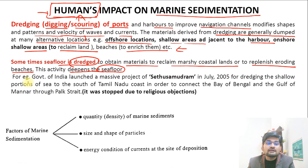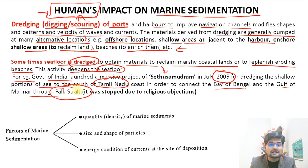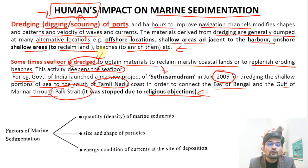For example, the Government of India launched the Setu Samudaram project in 2005 for dredging the shallow portion of sea between the Tamil Nadu coast, the Bay of Bengal, and the Gulf of Mannar Palk Strait. Due to religious objections, it was stopped. The removal of sediments would entirely change the course of wave and current flow and affect marine life.